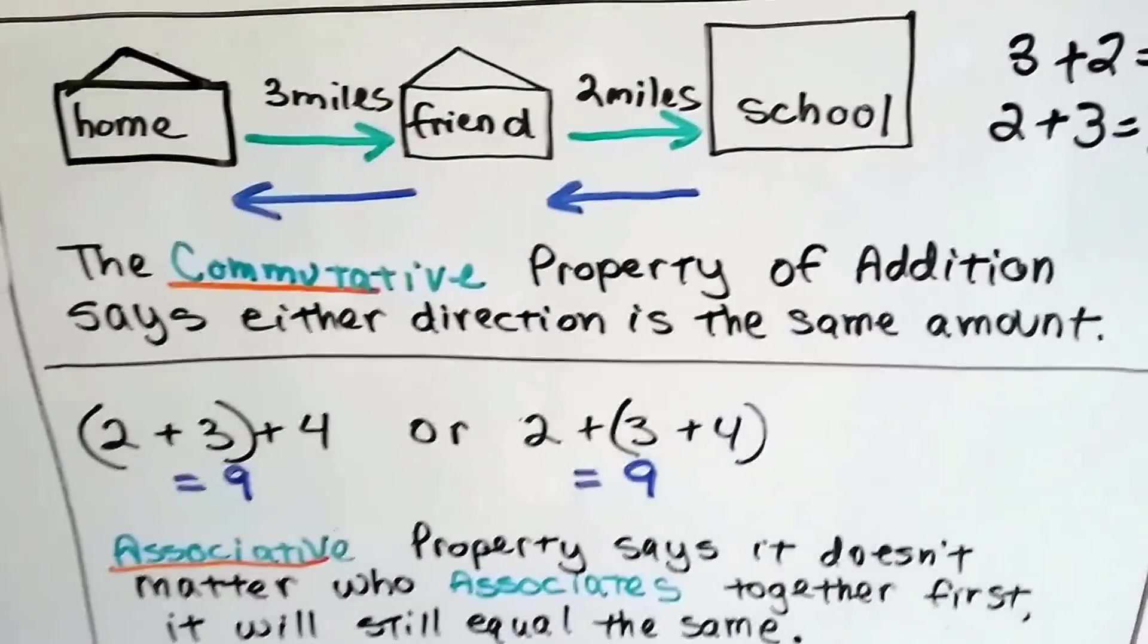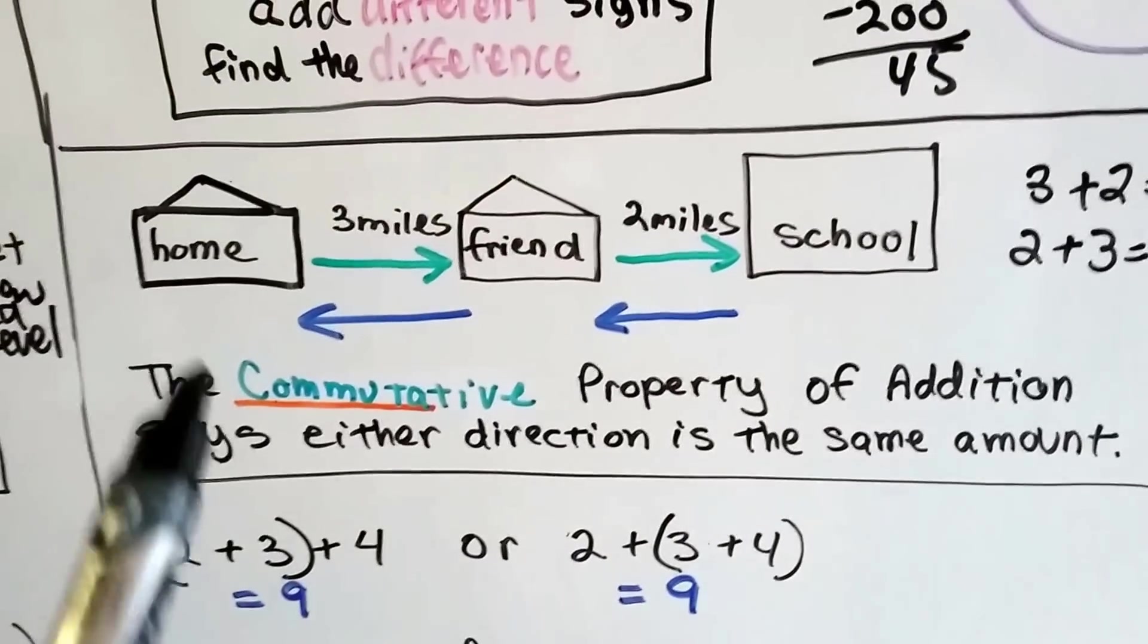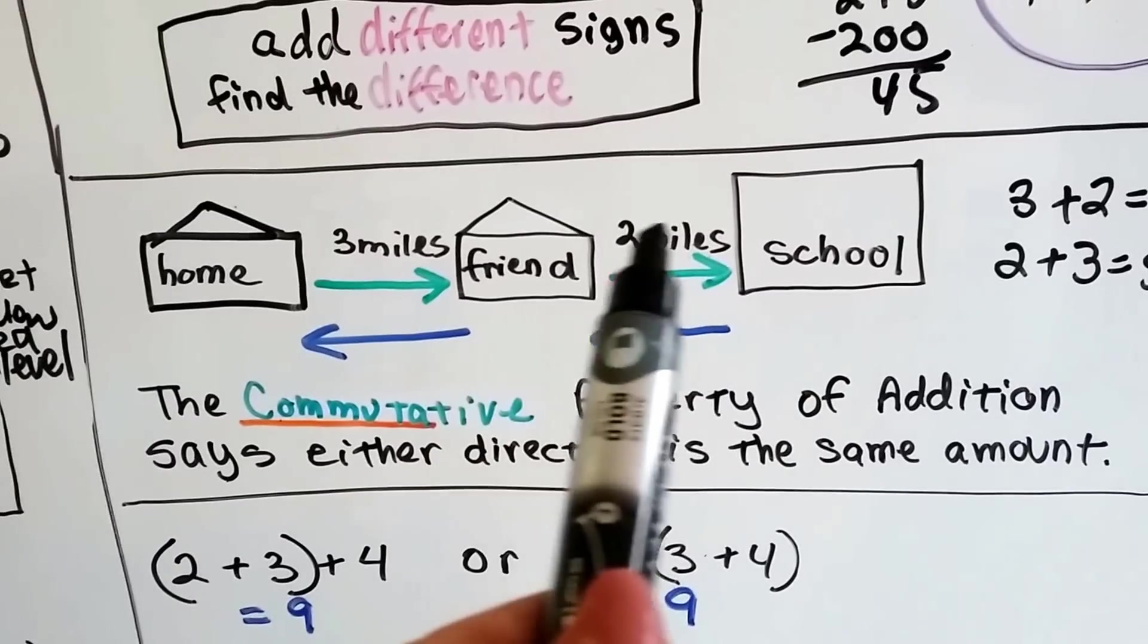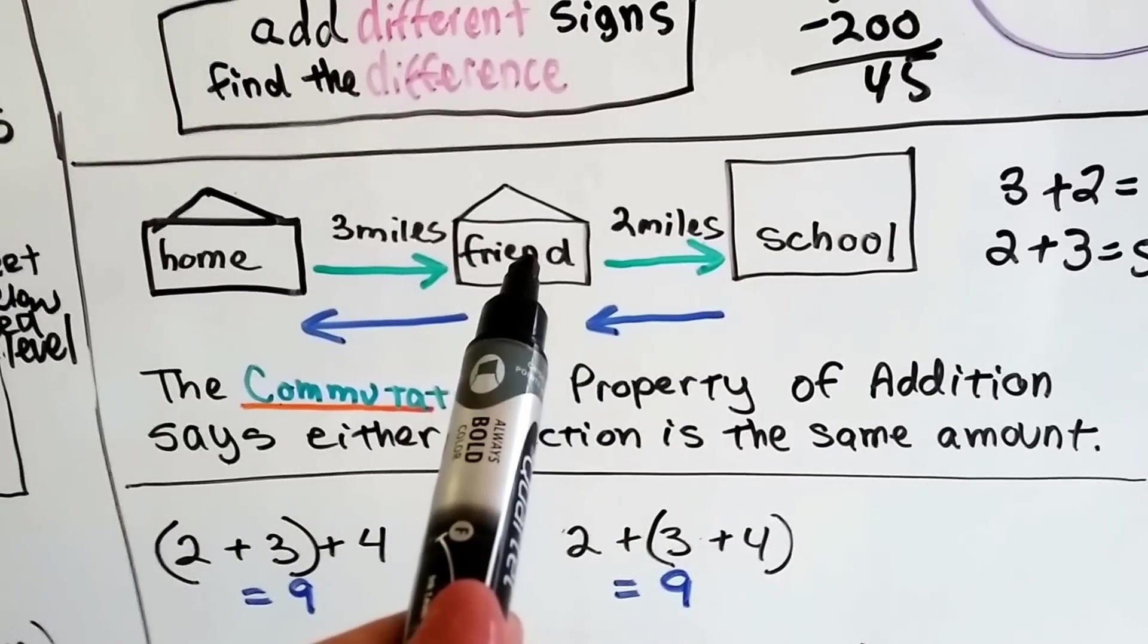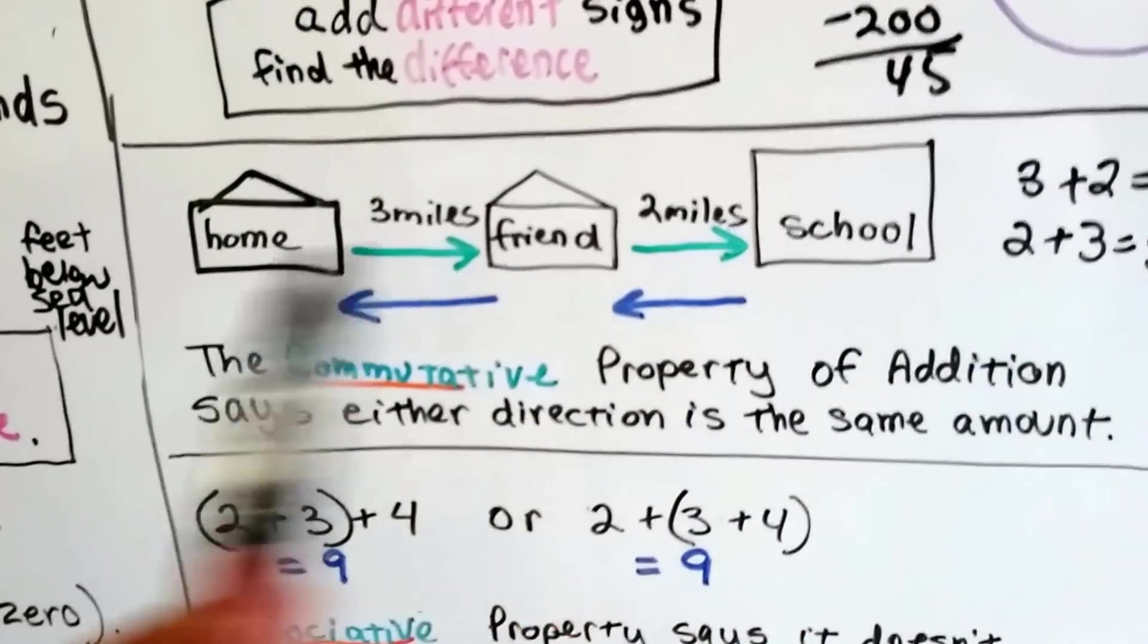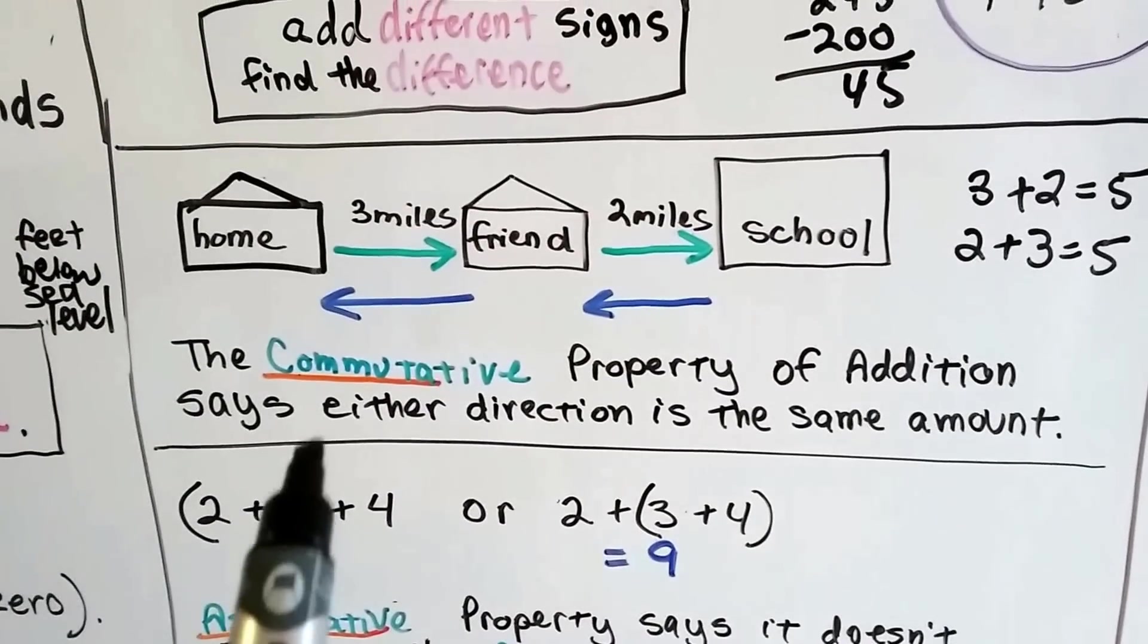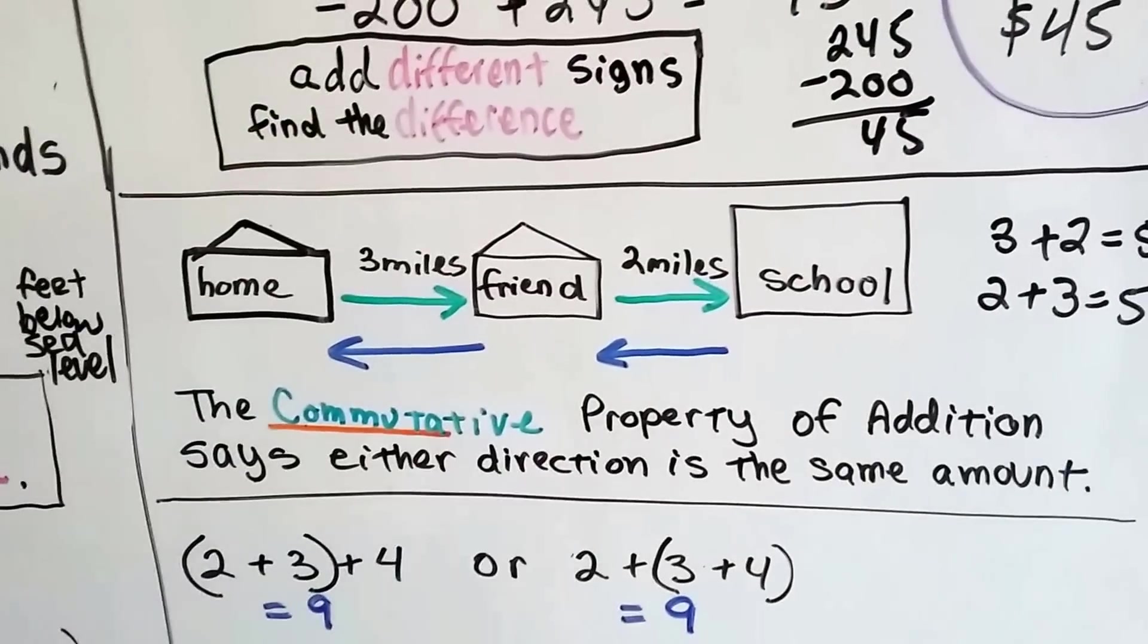Do you remember the commutative property? It says that either direction, it's going to be the same amount when you add them. If you're at home and you commute three miles to your friend's house, and then both of you commute two miles to school, and then when you're coming home, you go two miles to your friend's house, you drop them off and go three miles to your house, you went five miles to school and you went five miles home. It was the same either direction. Three plus two equals five and two plus three equals five. It didn't matter which one we did first. That's the commutative property.